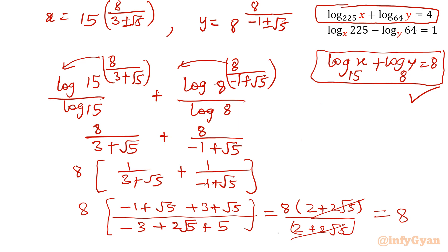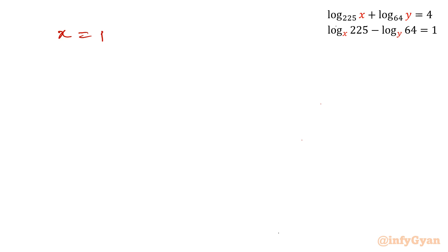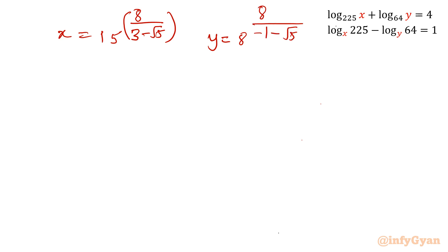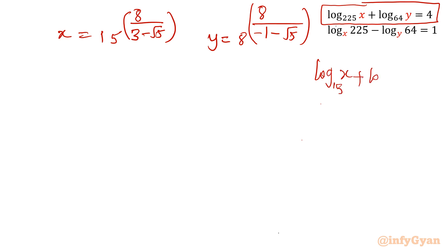Similarly, for the second value set — x equals 15 to the power 8 over (3 minus root 5) and y equals 8 to the power 8 over (negative 1 minus root 5) — you can verify by substituting into the equations and you will get the same confirmation. I hope you liked this video. Thank you so much for watching. Do not forget to like, share, and subscribe. Bye-bye till the next video.